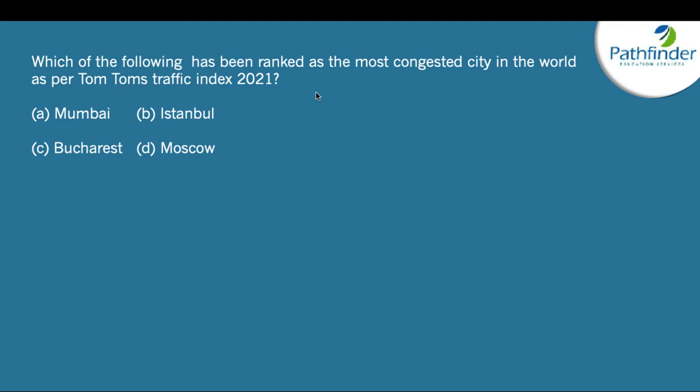Which city has been ranked the most congested in the world as per Tom Tom's Traffic Index 2021? The correct answer is Istanbul in Turkey — not Mumbai or Bucharest. Among Indian cities, Mumbai is ranked 5th, Bangalore 10th, Delhi 11th, and Pune 21st. This index is calculated among 404 cities across 58 countries.